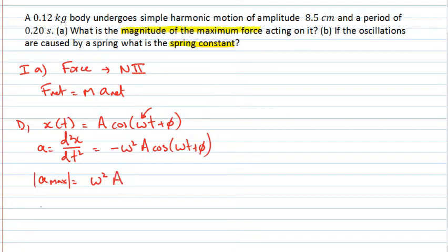Now, I'm given information about what the amplitude is. It's 8.5 centimeters, or 0.085 meters. And even though I'm not given what omega is, I am told what the period of oscillation is. I know that T is equal to 0.2 seconds.